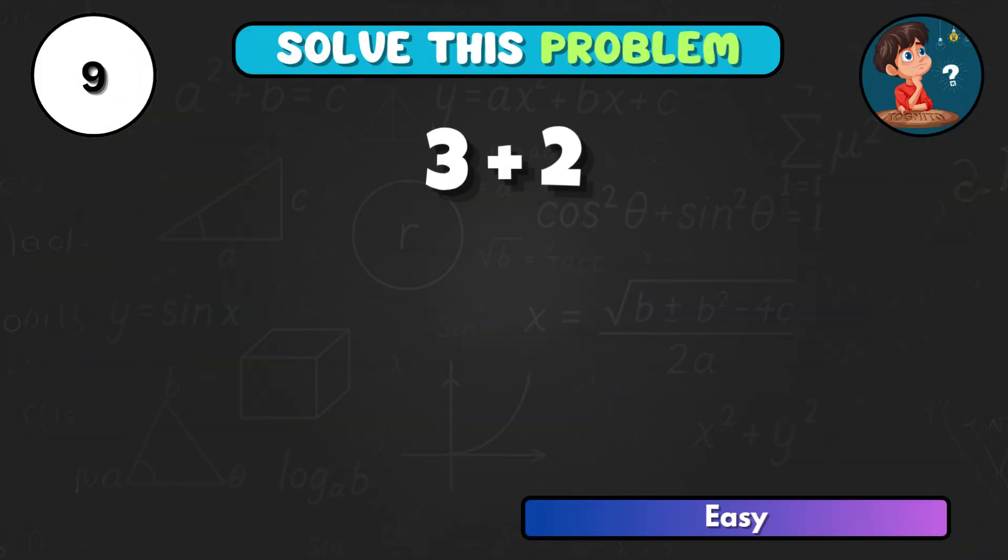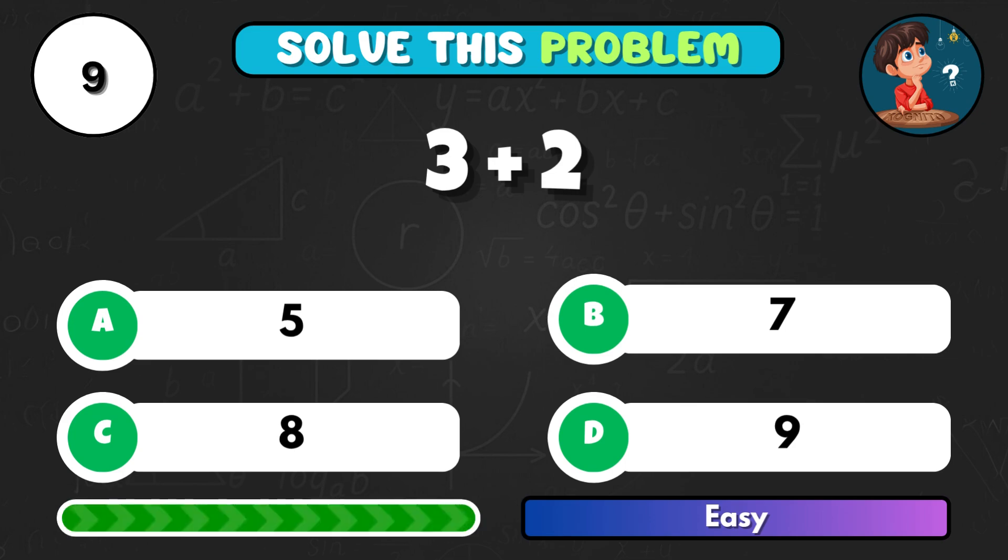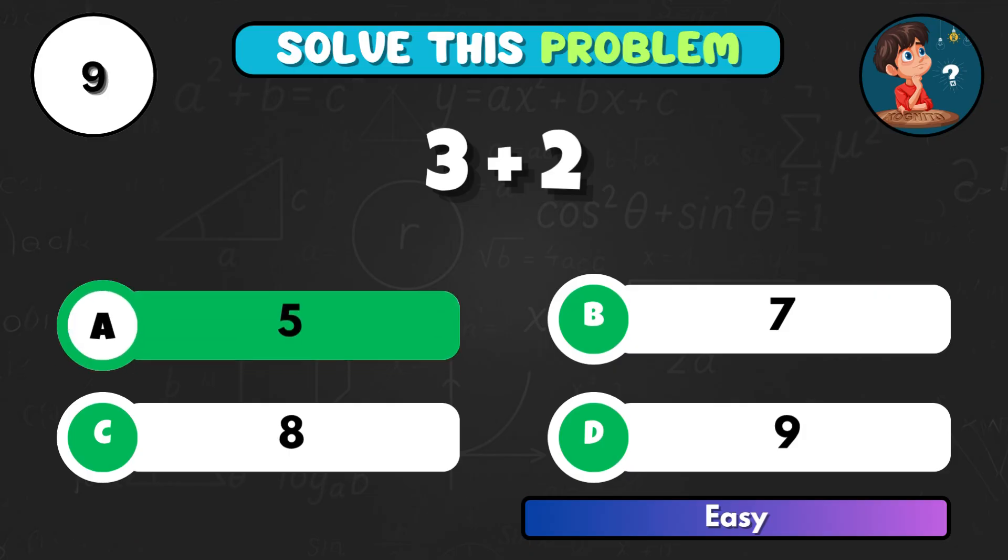3 added to 2, what does that make? That's A, giving you 5.